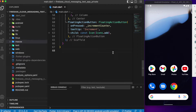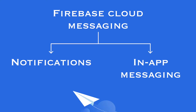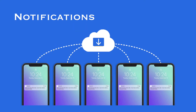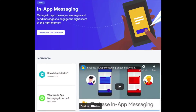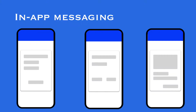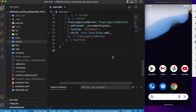Firebase messaging can be categorized into two types. The first is Firebase push notification, which is similar to the traditional way of notifying users about any event changes — the same kind we get for all apps. The second category is in-app messaging. As the name suggests, the user will only be notified or able to view the content when they open the app.